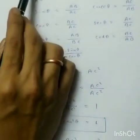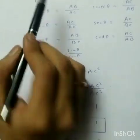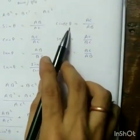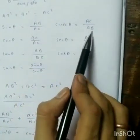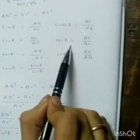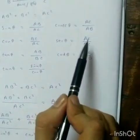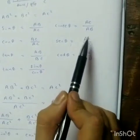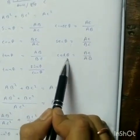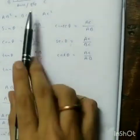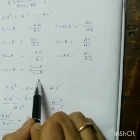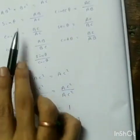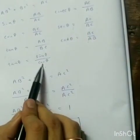Tan theta equals lombo by bhumi, that is height by base. Cosec theta is the reciprocal of sin theta. Sec theta is the reciprocal of cos theta. Cot theta is the reciprocal of tan theta, which equals sin theta divided by cos theta — that is tan theta.